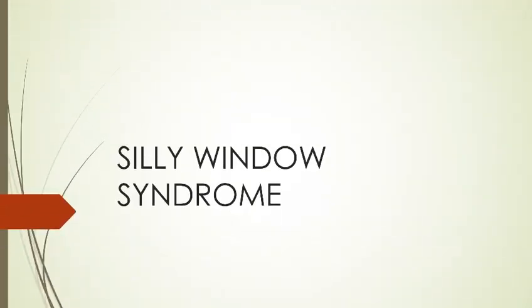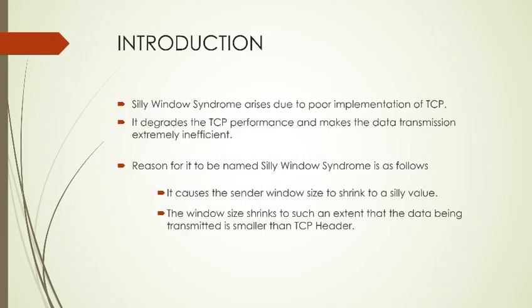So what is Silly Window Syndrome? Silly Window Syndrome is a problem that arises due to a poor implementation of TCP. It degrades TCP performance and makes data transmission extremely inefficient. It is named Silly Window Syndrome because it causes the sender window size to shrink to a silly value of 1 byte — the window size shrinks to such an extent that the data being transmitted is smaller than the TCP header itself.